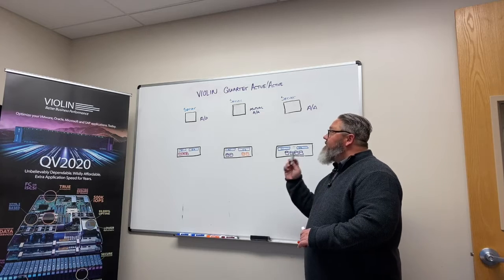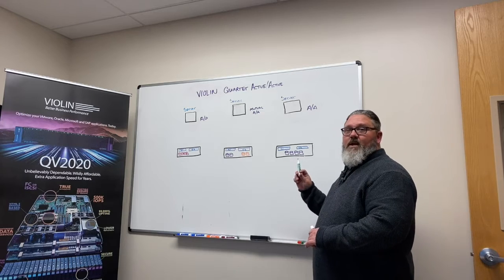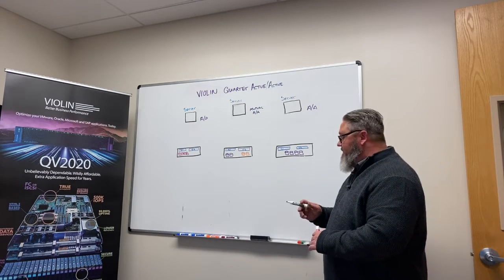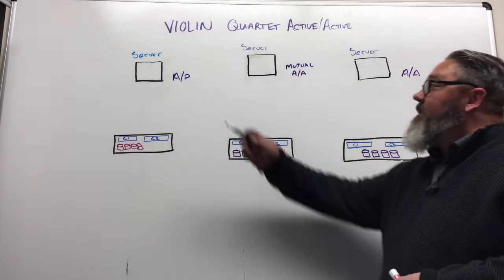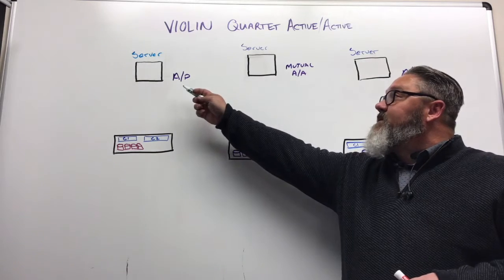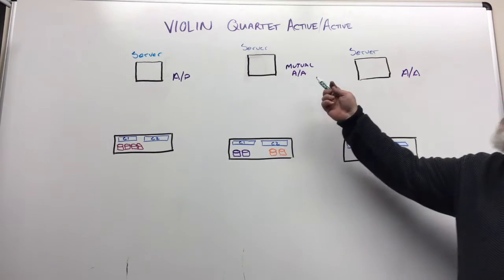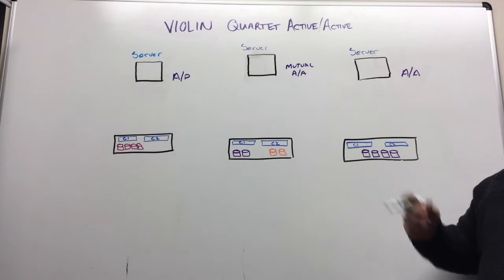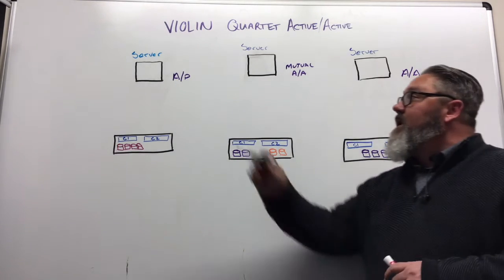Today I'd like to talk to you about the three methods by which we handle multipathing within the storage environment. We have an active-passive solution, a mutually active-active solution, and a true active-active solution.